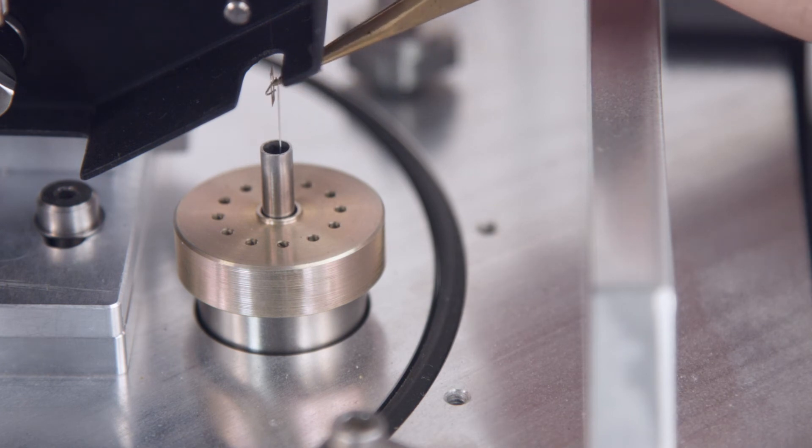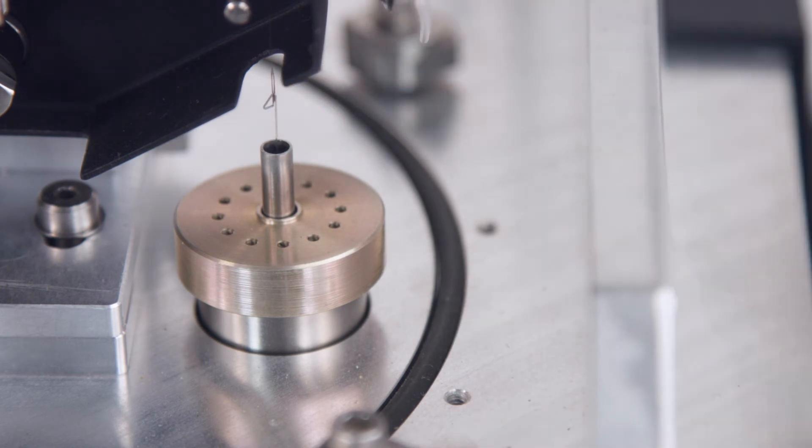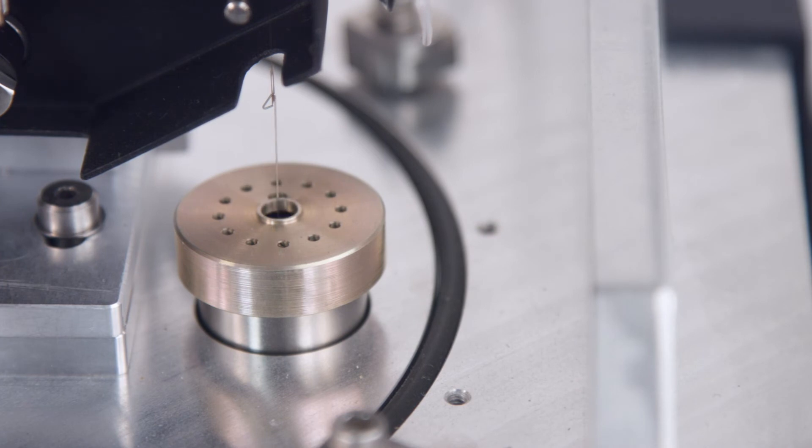Using tweezers, gently grasp the hang down wire and insert it through the eyelet in the decoupler loop. Remove the tool when finished.